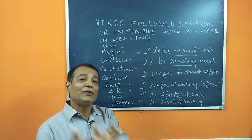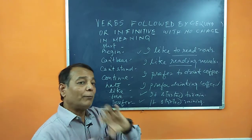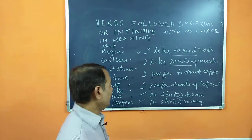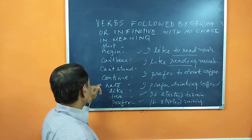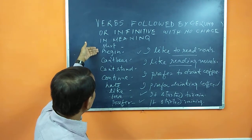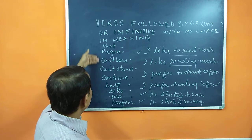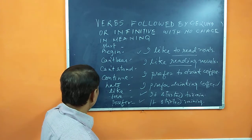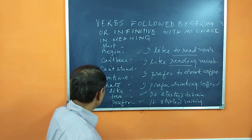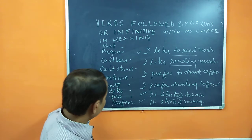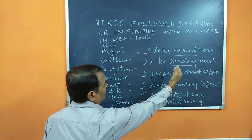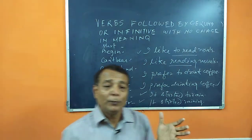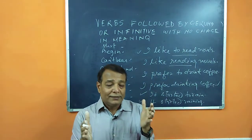You can use all these verbs from the list — can't bear, start, begin, continue, hate — with either form. For example: I hate to gossip, I hate gossiping. I like to read novels, I like reading novels. Hope you enjoyed this lesson.